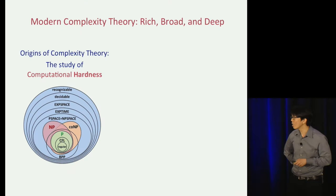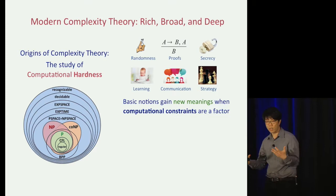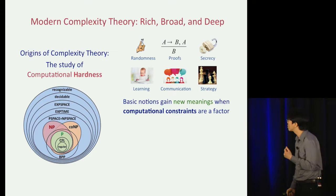Complexity theory has added whole new dimensions to basic notions like randomness, proofs, secrecy, learning, and so on. Every single one of these notions predates computer science, but they have taken on fundamental new meanings now that computational constraints are a factor.